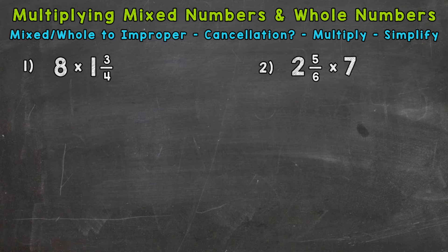So let's jump right into number 1 where we have 8 times 1 and 3 fourths. The steps that we're going to take to solve these are at the top of the screen. The first thing we need to do is change any mixed numbers or whole numbers to improper fractions. That way we have numerators, top numbers, and denominators, bottom numbers, and we can multiply straight across.